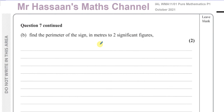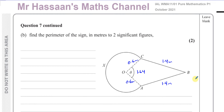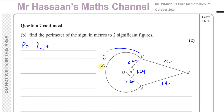Part B asks us to find the perimeter of the sign in metres to two significant figures. The perimeter is the outline of the sign: the major arc AC of the sector, plus the lengths AB and BC. So the perimeter equals the arc length L plus 2 × 1.4. We need to find L, the length of the major arc.